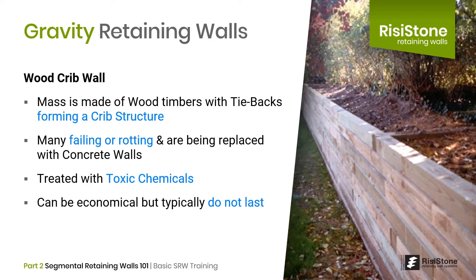Another early example of a gravity wall is the wood crib. In this case, the gravity mass is composed of a wood structure filled with gravel or some other soil. As we have seen over the years, the wood has a tendency to rot, despite being treated with toxic chemicals. This is due to the constant moisture contained in the infill soils. It may be initially seen as economical, but these walls typically don't last that long.